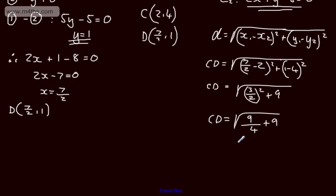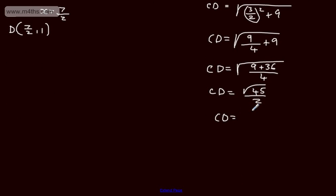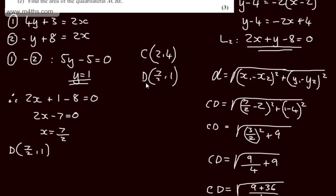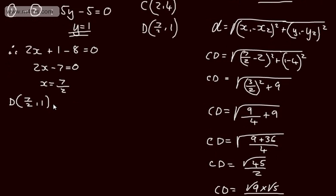Combining the terms: 9 plus 36 over 4 gives the square root of 45 over 4. We can prime factorise: root of 9 times root of 5 over 2, which gives 3 over 2 times root 5, as required. That's three marks in total. You can show it whichever way you prefer — I've simply plugged in the values, squared them, and tidied up.